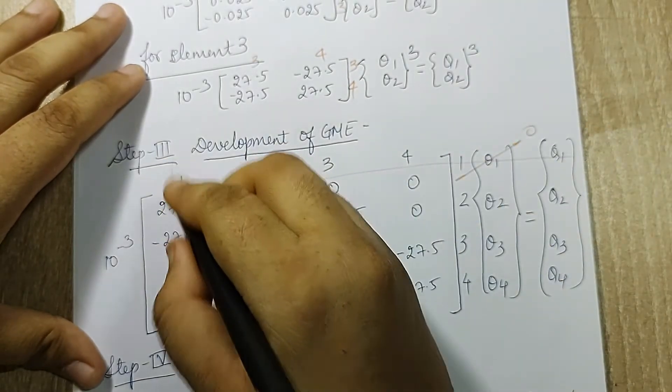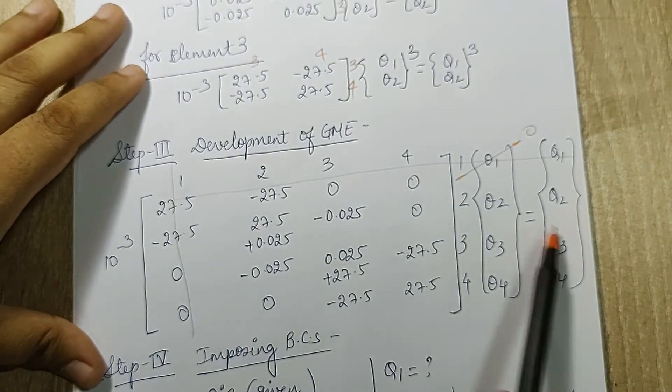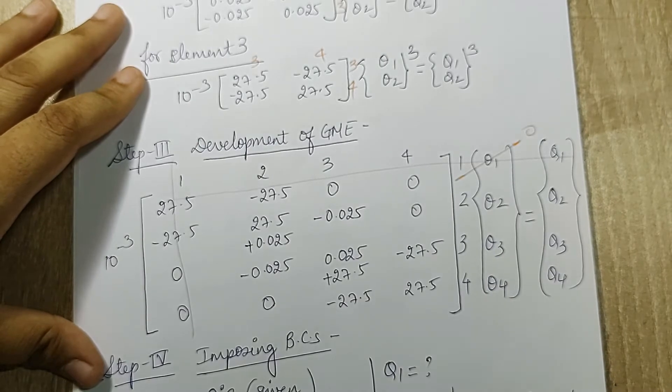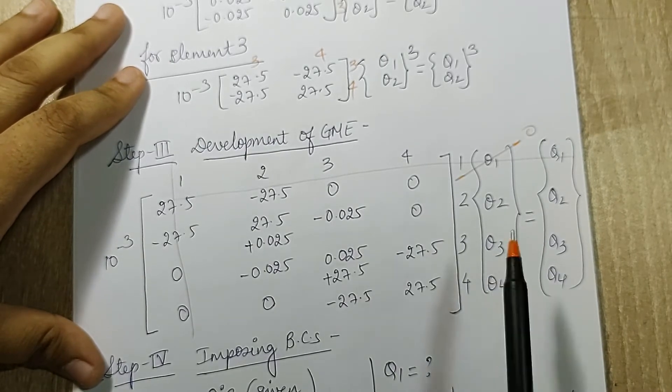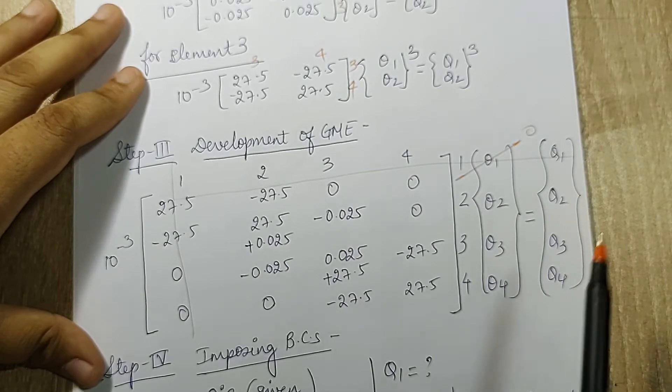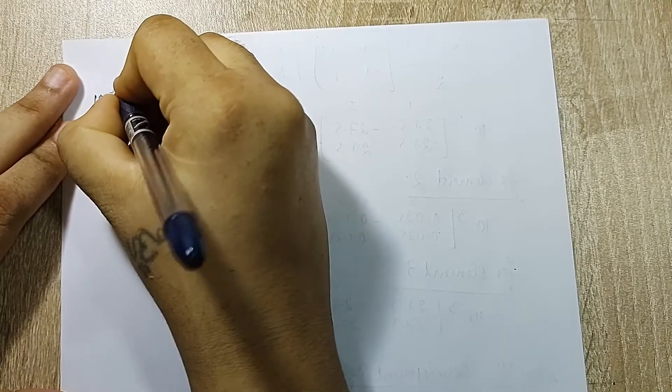Since this is 0, I'll neglect the first row and first column for some time. I'll write these equations, calculate the value of theta_2, theta_3. Theta_4 is known to me as 20 degrees Celsius. I first calculate theta_2, theta_3, and then find q_4 and q_1. I have 10 raise to minus 3.